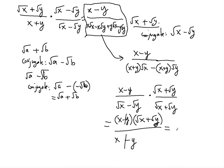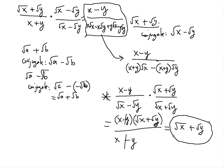It turns to 1 times (√x + √y), which is simply √x + √y — that's your final answer. We've transformed the original fraction (x − y) over (√x − √y) into simply √x + √y. This is how you rationalize the numerator or the denominator when you have a question like this.